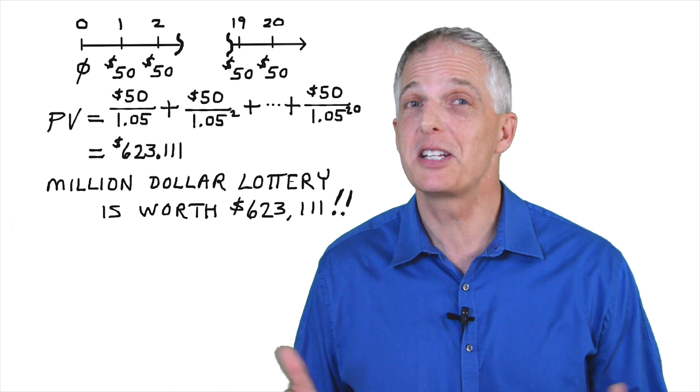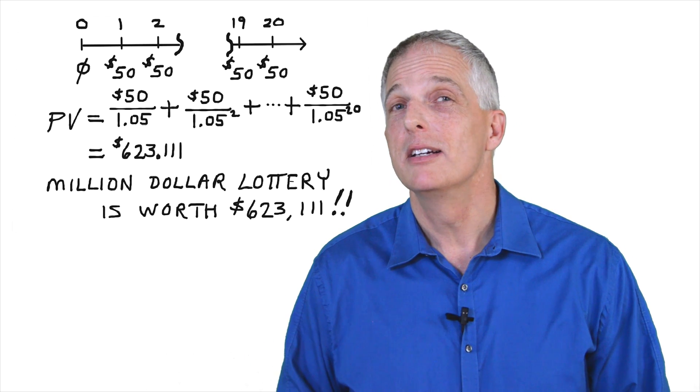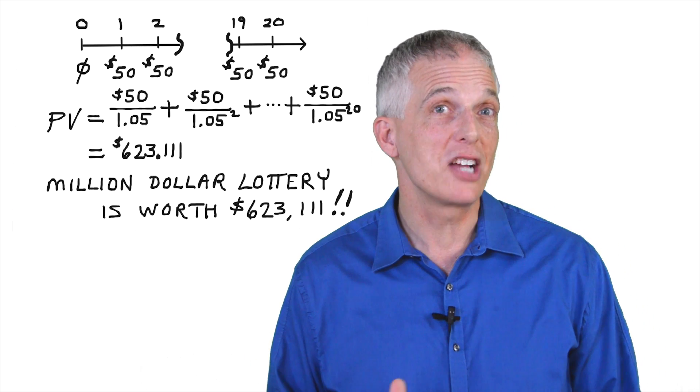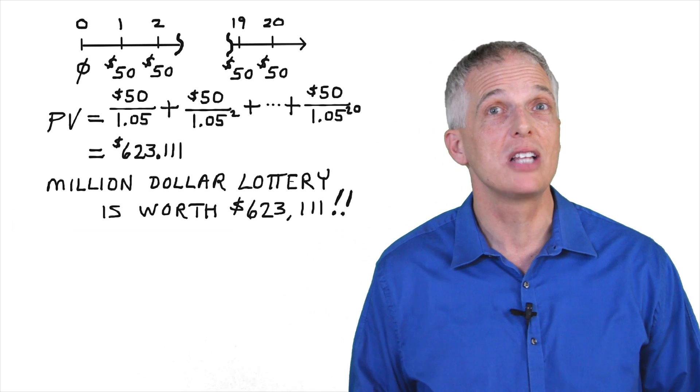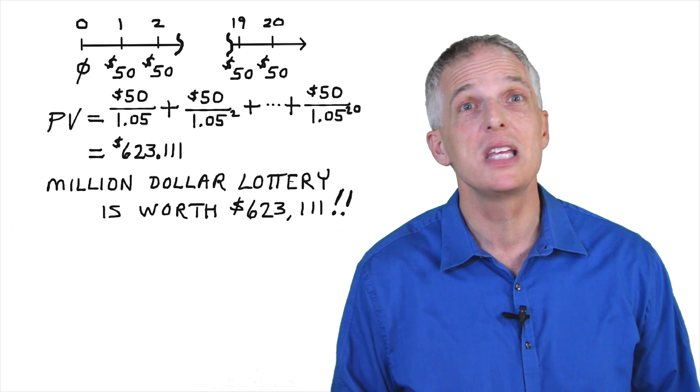Frankly, I'd still accept the lottery win. But if someone offered me a cash payment of $700,000 or the million dollar lottery win, I'd prefer the immediate cash payment of $700,000. Why? Because I could invest that $700,000 at the risk-free rate of 5% and generate annual cash payments exceeding $50,000 per year for each of the next 20 years.